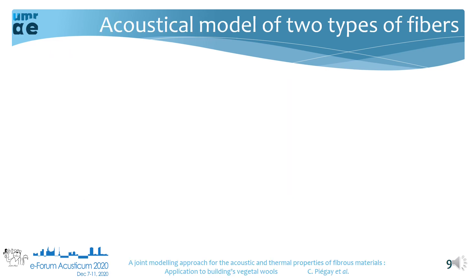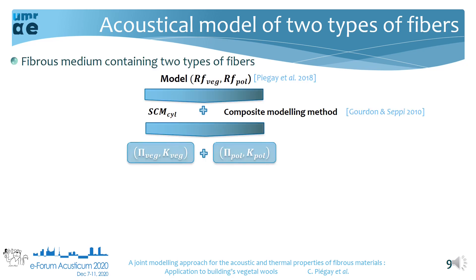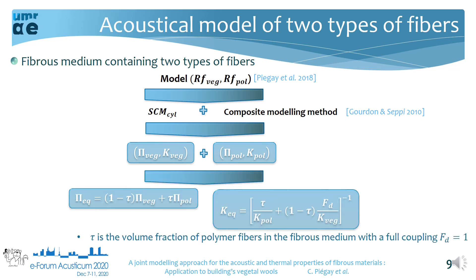As previously noted, vegetal wools are composed of two types of fibers — vegetal and polymer. To take this specificity into account, we use a modeling approach based on a mix of the cylindrical SCM with the composite modeling method. This allows us to determine an equivalent dynamic density and an equivalent bulk modulus as a function of tau, the volume fraction of polymer fibers in the fibrous medium, under the assumption of full coupling.